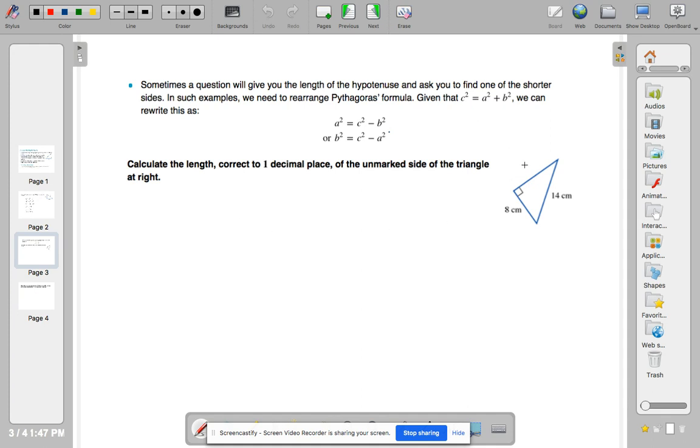So here, let's label our triangle again. Our C is 14. We'll call 8 centimeters our B. And our missing side will be A.